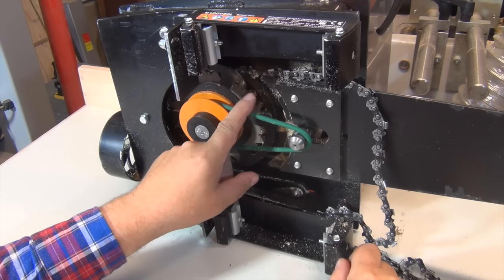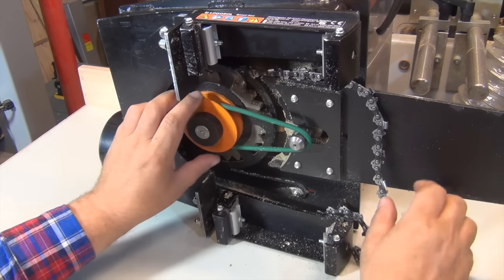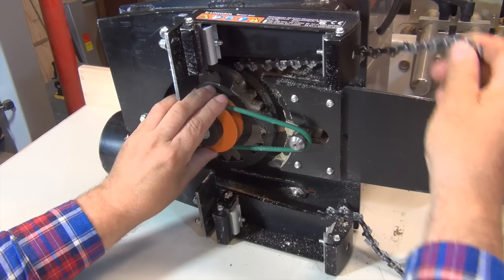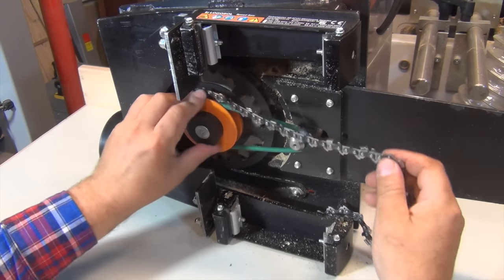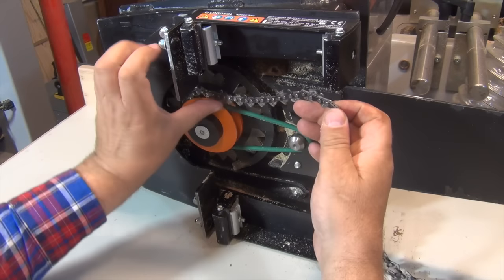There you see a big pocket. To make it easier to remove the chain and put it on, you just turn it. And it's off.